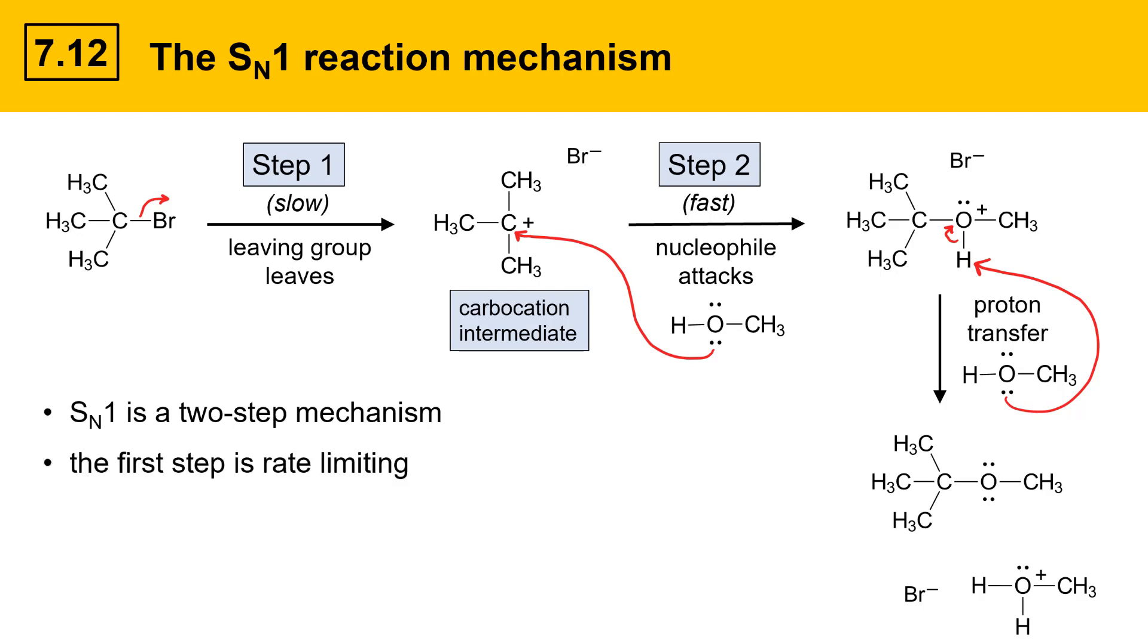In this mechanism, the first step is rate limiting. The slow step is forming the carbocation. Once the carbocation forms, the second step, attack of the nucleophile, is fast. The reaction overall is first order, or unimolecular. Only the alkyl halide participates in the rate limiting step.